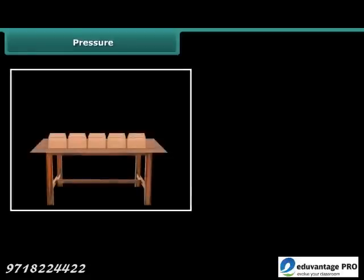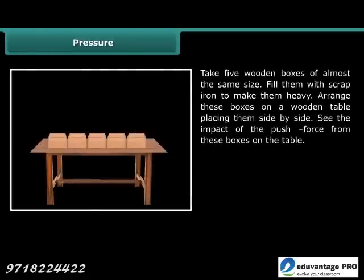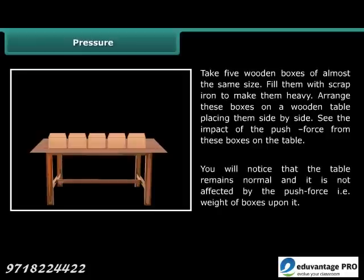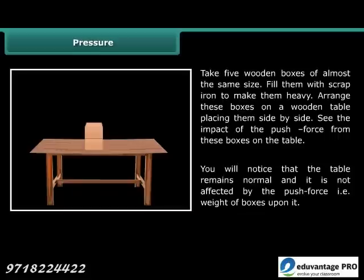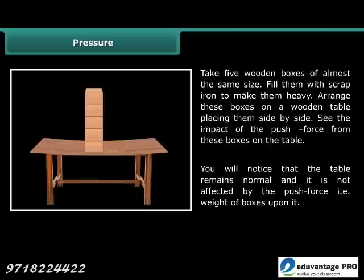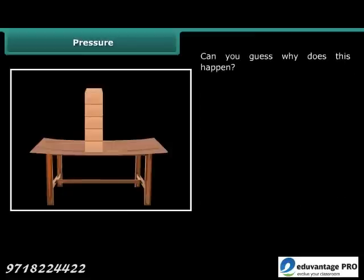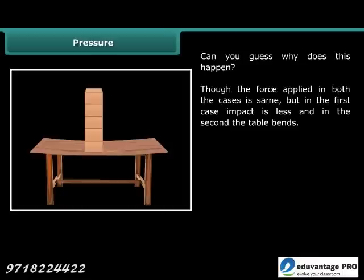Let us perform an activity on pressure. Take five wooden boxes of almost the same size, fill them with scrap iron to make them heavy. Arrange these boxes side by side on a wooden table — notice the table remains normal and is not affected by the weight. Now rearrange these boxes towards the center, one over the other. In this arrangement the table either bends or breaks under the weight. Though the force applied in both cases is the same, the impact differs because the area changes.